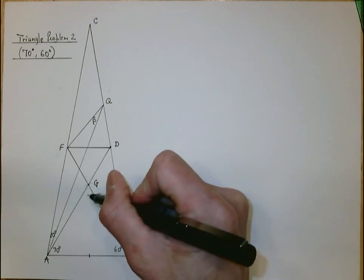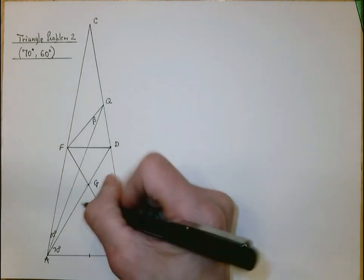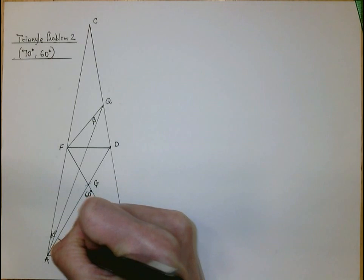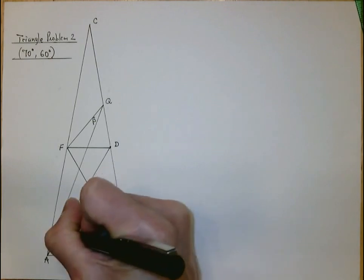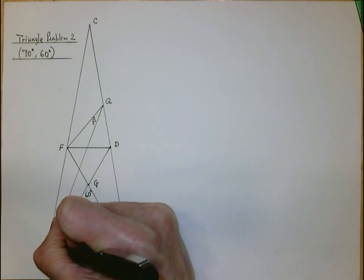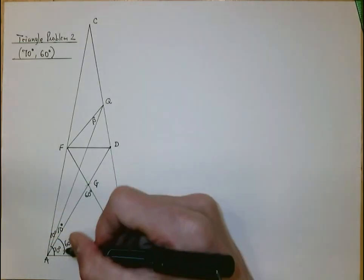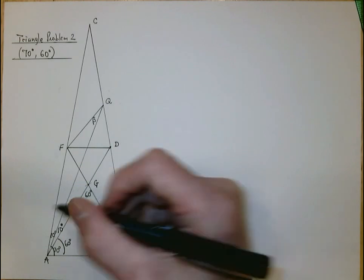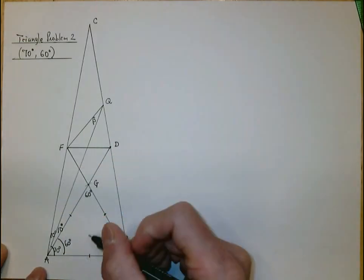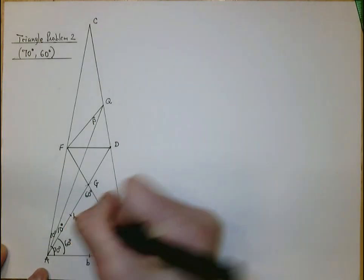That means the sum of these two base angles will be 120 degrees, which means each is 60 degrees — 60, 60, and 60 — making it an equilateral triangle. The big angle here is 70 degrees, so the remaining angle is 10 degrees. I'll call AE small b, so these three sides are all small b.